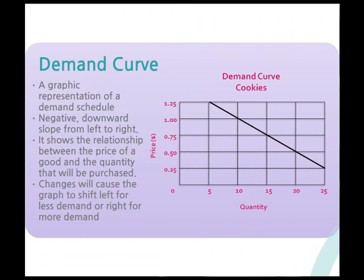The demand curve is a graphic representation of a demand schedule. This demand curve has a negative slope, showing the relationship between the price of a good and the quantity that will be purchased. The quantity is on the x-axis, and the price is on the y-axis. Changes will cause the graph to shift left for less demand, or right for more demand. This demand curve is for the cookie example — as the price decreases, the quantity demanded increases.